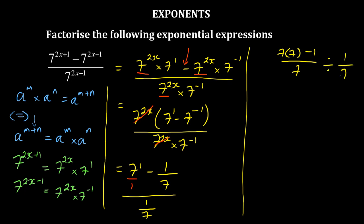So 7 times 7 which is 49 minus 1 over 7, divided can be changed into times 7 over 1, which is equal to 48.